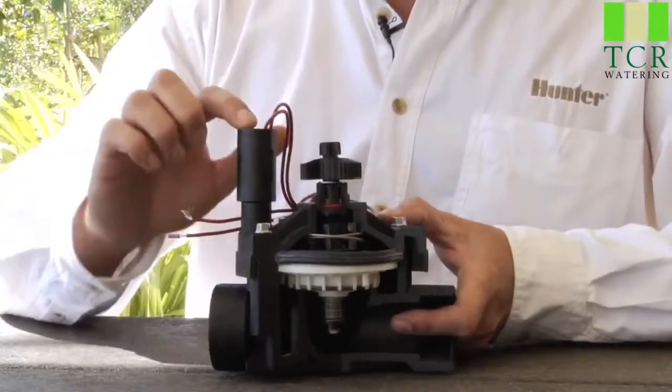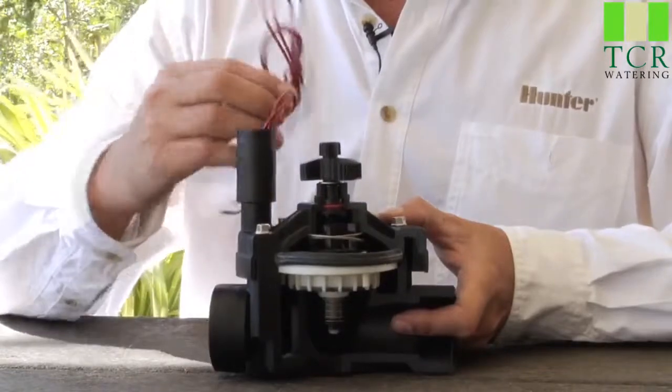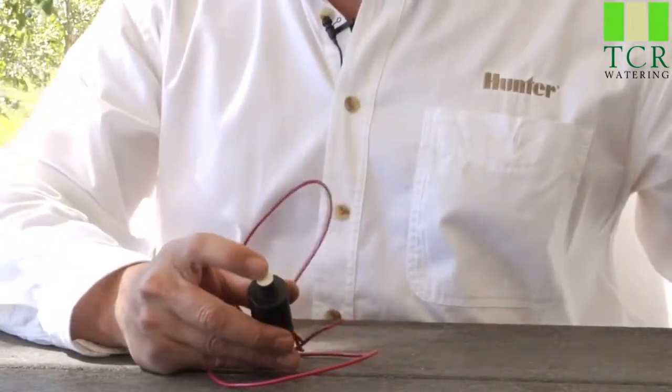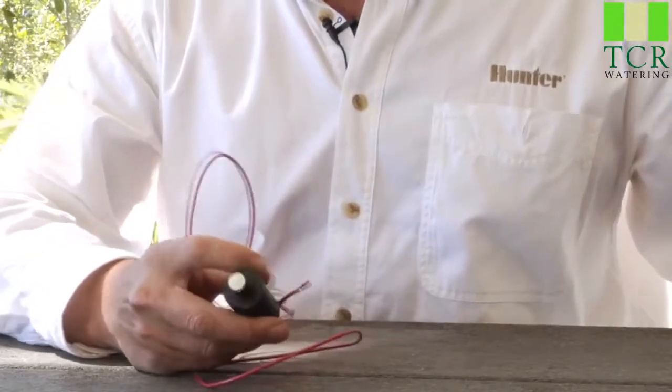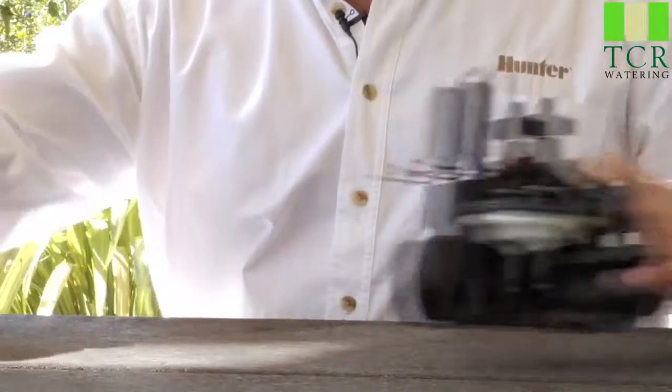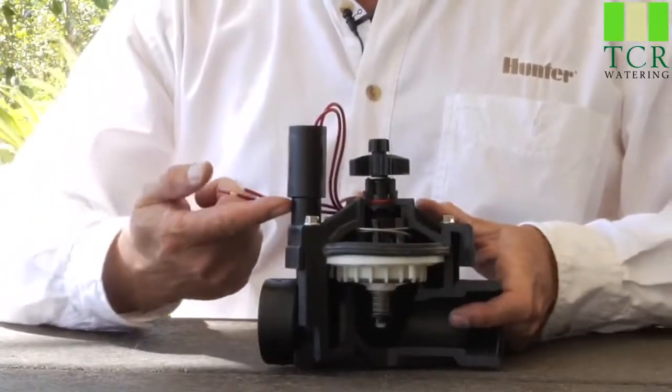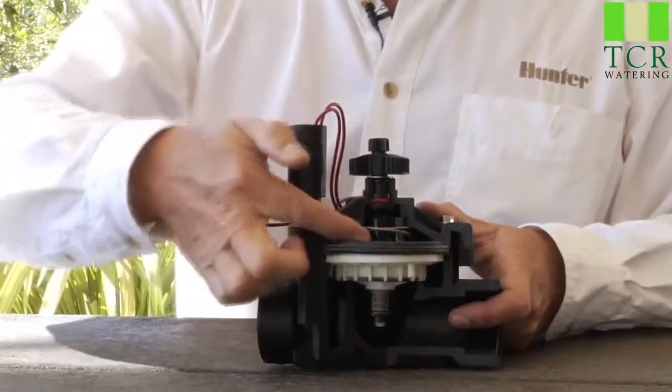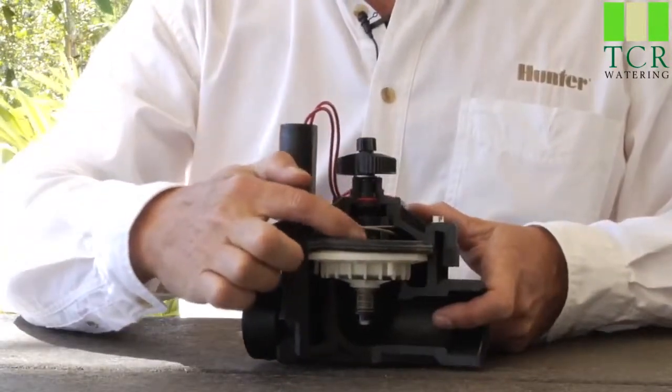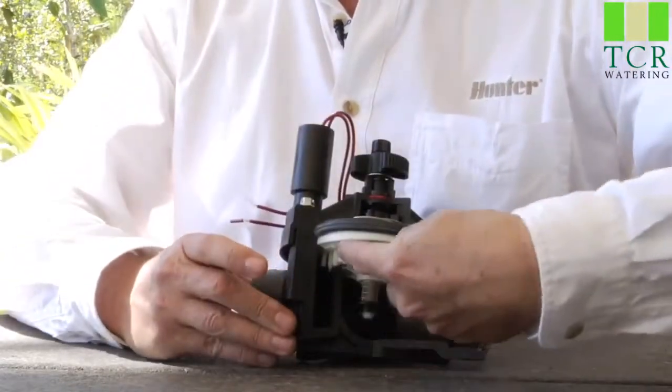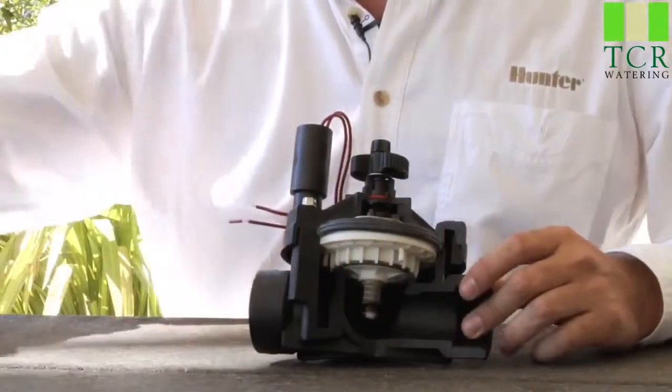Beyond that we have the solenoid, and that's what receives the electricity from the controller. The solenoid has a plunger on the bottom. When it's electrically activated, the plunger will raise up. And when it raises up, that little rubber gasket comes off of its port and allows the water to go down the exhaust port, thus decreasing the pressure on top of the diaphragm, allowing the diaphragm to move up and allowing the water to flow out to the field.